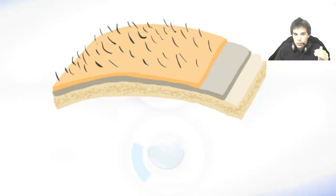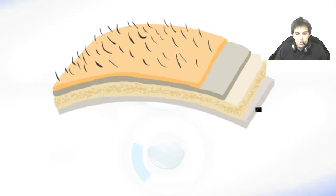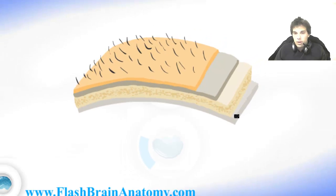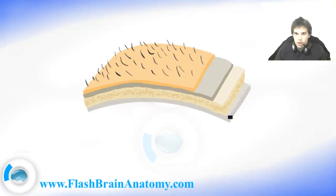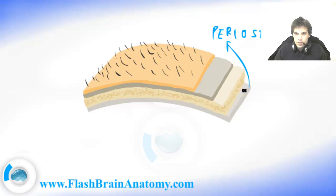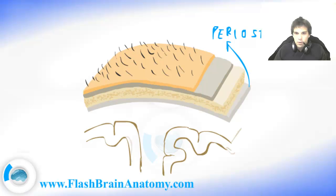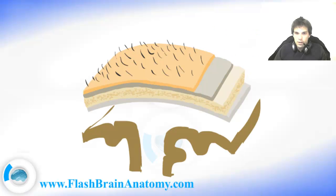Now the first brain membrane that touches the bone is the dura mater, but it's the outer layer of dura mater called the periosteal dura mater. So this is the periosteal dura mater, and now first I'm going to draw a cortex of the brain.